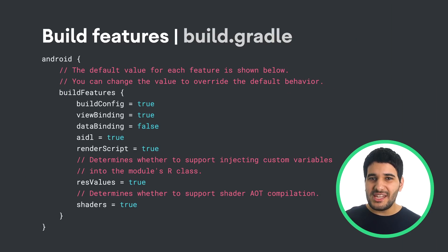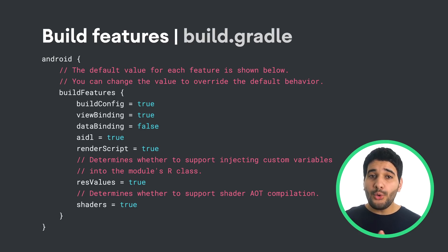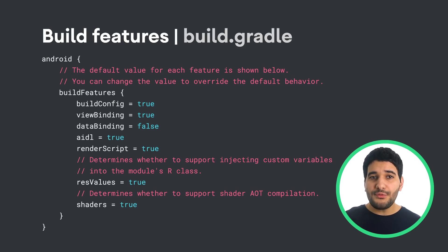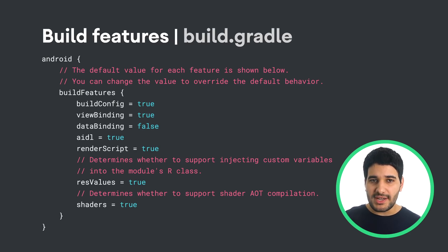Version 4.0 of the Android Gradle plugin allows you to enable or disable build features such as view binding and data binding. You can use the features block to enable only the features you want, so you can improve the scalability of large projects.